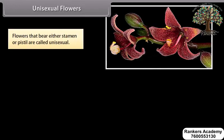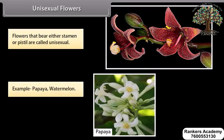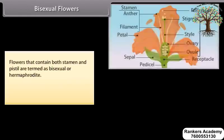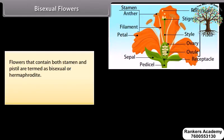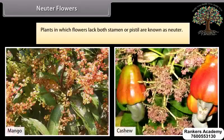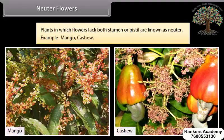Unisexual flowers: Flowers that bear either stamen or pistil are called unisexual. Example: Papaya, watermelon. Bisexual flowers: Flowers that contain both stamen and pistil are termed bisexual or hermaphrodite. Example: Pea, hibiscus, and mustard. Neuter flowers: Plants in which flowers lack both stamen and pistil are known as neuter. Example: Mango, cashew.